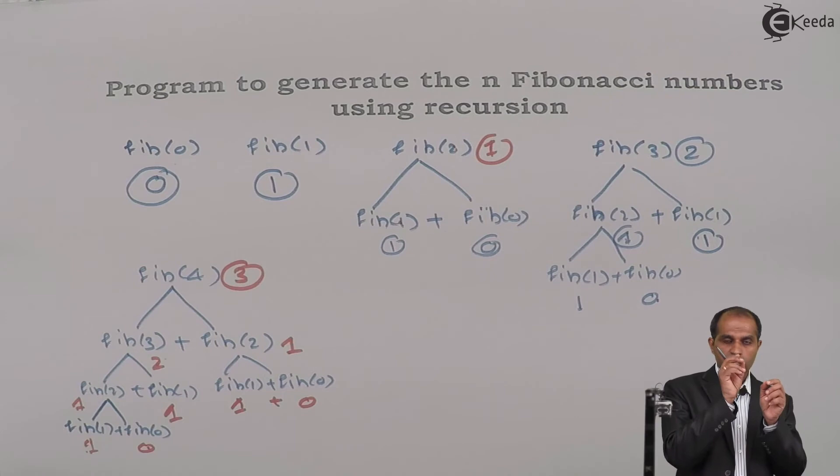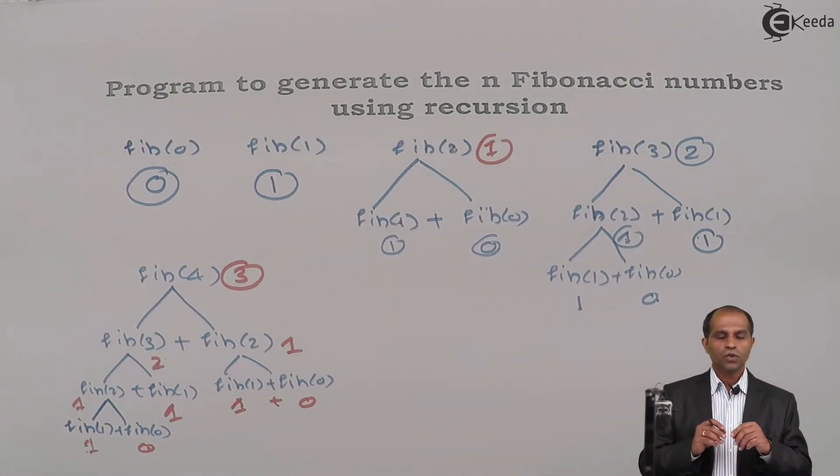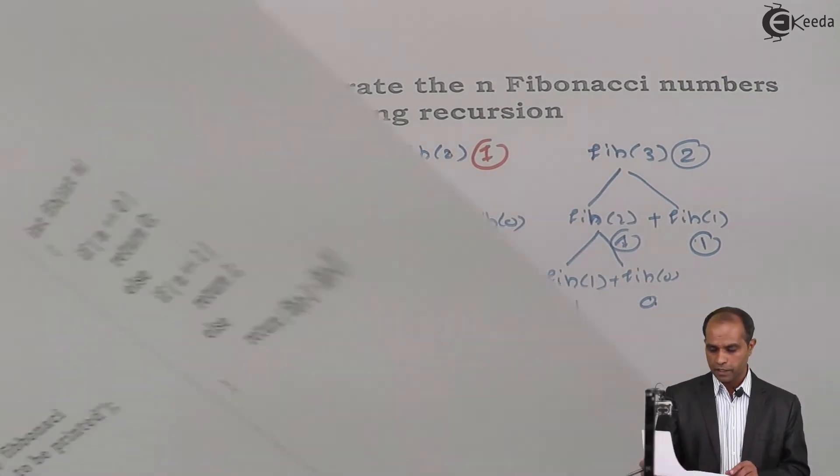If n minus 1 is equal to either 0 or 1, if n minus 2 is equal to 0 or 1, I'll give the answer. If not, I'll grow this particular tree further. So I can use this particular process to help the Fibonacci number generation using recursion. Let's see the code for implementing this particular tree diagram.